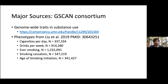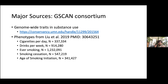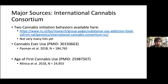The next major source is the GSCAN Consortium, which focuses on substance use traits rather than disorders, allowing very large sample sizes. These phenotypes come from the Liu et al. 2019 Nature Genetics paper and include cigarettes per day, drinks per week, ever smoking, smoking cessation, and age of smoking initiation. While correlated with use disorders, these traits are also separable — useful if you're interested in consumption frequency or initiation behaviors.